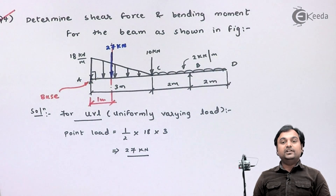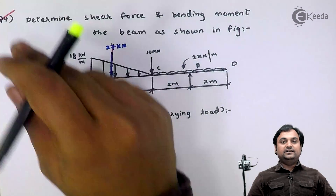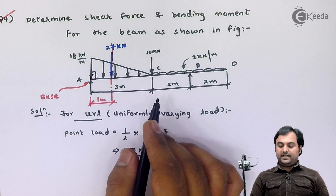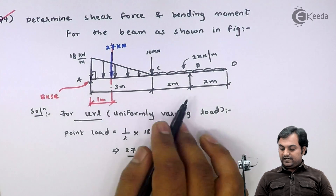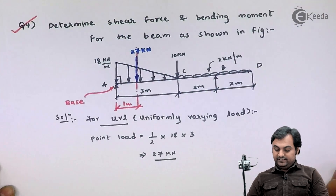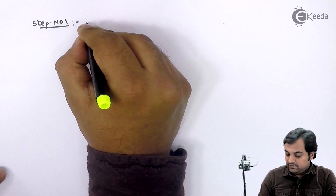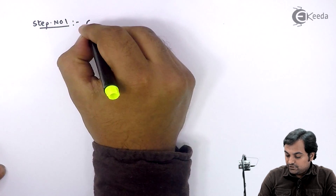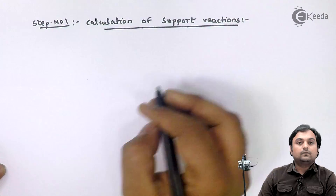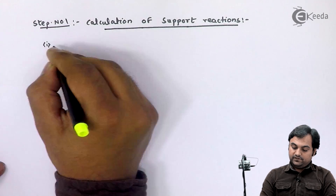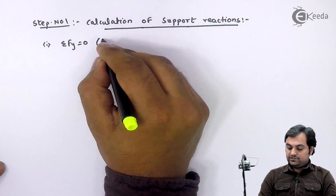That is the conversion of UVL into a point load. Now, step number one is the calculation of support reactions. We have supports at points A and B, so we need to calculate R_A and R_B.